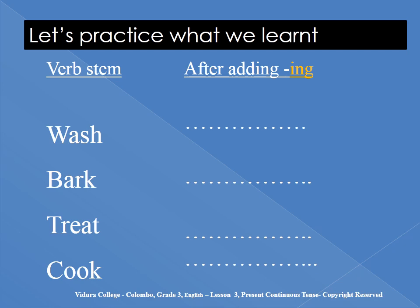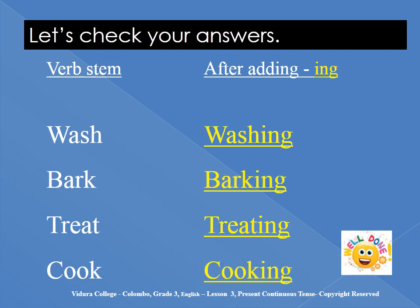Did you write the answers? Let's check your answers now. What are the verb stems? Wash, bark, treat, cook. After adding -ing: wash → washing, bark → barking, treat → treating, cook → cooking. Well done.